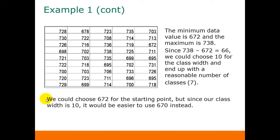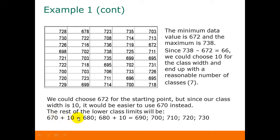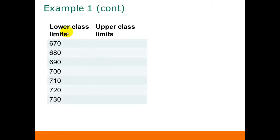Next, we need to choose our starting point. We could choose our minimum data value of 672, but since our class width is 10, it would be a little bit easier to use 670 instead. To calculate the rest of our lower class limits, we just keep adding 10. So starting with 670, our lower class limits are 670, 680, 690, 700, 710, 720, and 730.